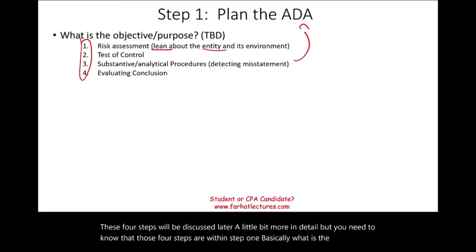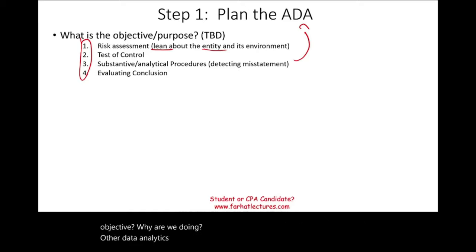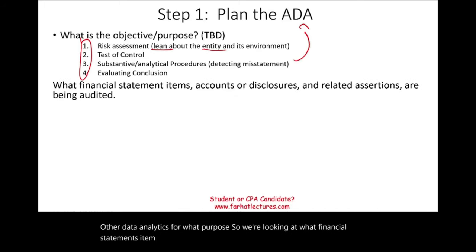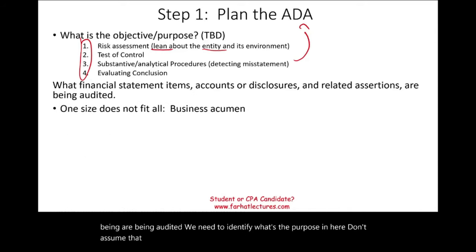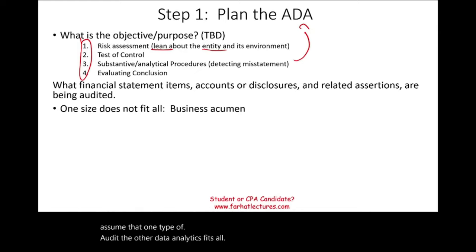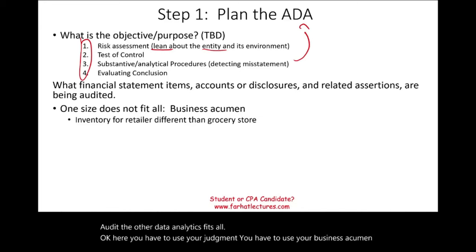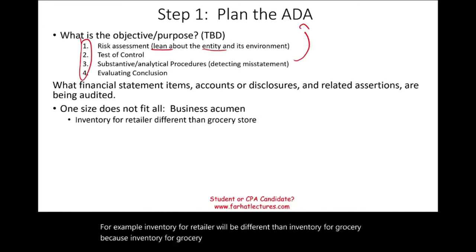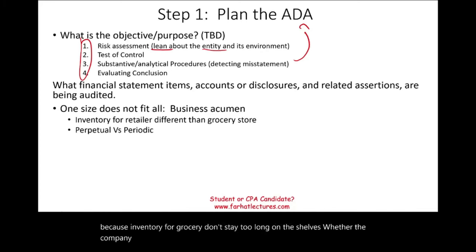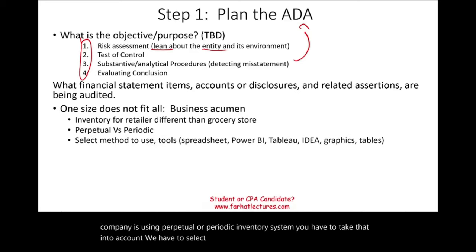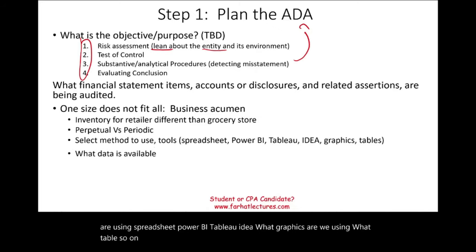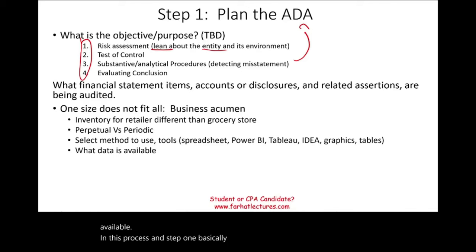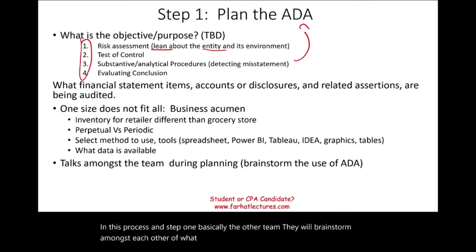Basically, what is the objective — why are we doing audit data analytics? We look at what financial statement items, accounts, or disclosures and related assertions are being audited. Don't assume that one type of audit data analytics fits all; you have to use your judgment and business acumen. For example, inventory for a retailer will differ from inventory for a grocery store because grocery inventory doesn't stay long on the shelves, and whether the company uses a perpetual or periodic system matters. We select proper methods and tools — spreadsheet, Power BI, Tableau, IDEA — and determine what data is available. The audit team brainstorms the potential use of ADA in this step.